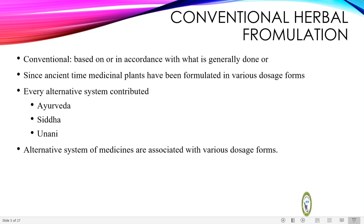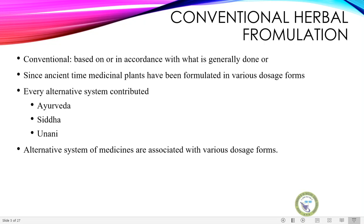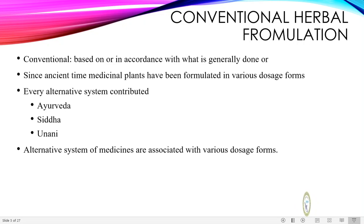In Ayurveda there are simple dosage forms — related to only one herb — as well as complex dosage forms where multiple herbs are incorporated. In Unit 1, we already dealt with various Ayurvedic dosage forms like Asava, Arishta, Avuleha, Guttika, Bhasma, and Churna. We studied their formulation as well as evaluation. These traditional dosage forms can be considered conventional dosage forms.